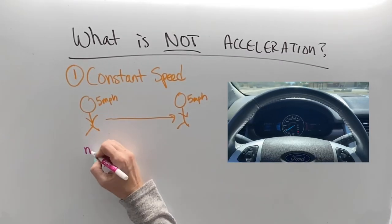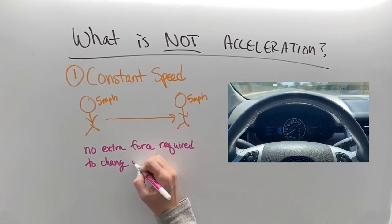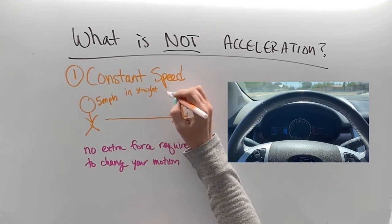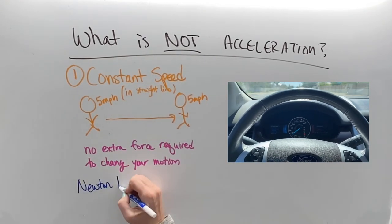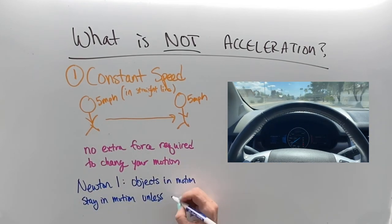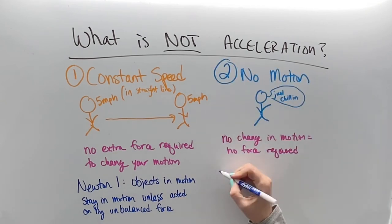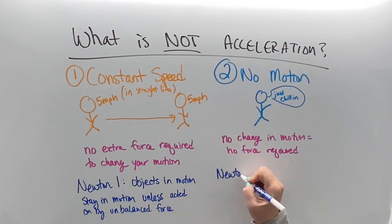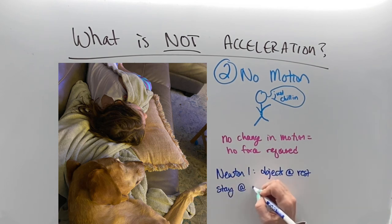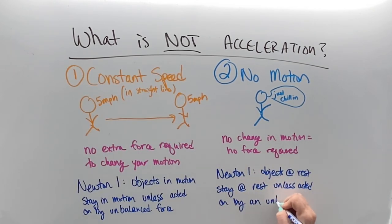What is not acceleration? The first thing is a constant speed. When you're traveling at a constant speed in a straight line, there's no extra force required to change your motion. This comes from Newton's first law: objects in motion stay in motion unless acted upon by an unbalanced force. The second thing is that acceleration is not just any motion — like when the dog is just laying on the couch with my daughter, because objects at rest stay at rest unless acted upon by an unbalanced force.